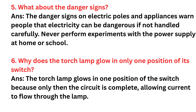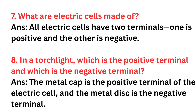Question number six: Why does the torch lamp glow in only one position of its switch? Answer: The torch lamp glows in one position of the switch because only then the circuit is complete, allowing electric current to flow through the lamp. Question seven: What are electric cells made up of? Answer: All electric cells have two terminals — one positive and one negative. Question eight: In a torch, which is the positive terminal and which is the negative terminal? Answer: The metal cap is the positive terminal and the metal disc is the negative terminal.